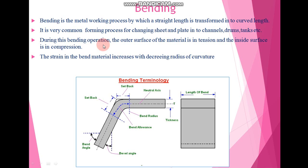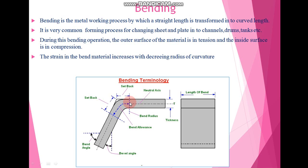During this bending operation, the bending material belongs to two zones. The outer surface of the material is in tension and the inside surface is in compression. Here we have the bending terminology diagram. During the bending process, the dotted lines indicate the neutral axis. Above the neutral axis we have the tension zone and below the neutral axis we have the compression zone.